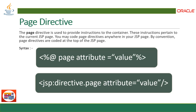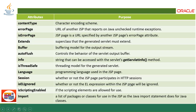The syntax for a page directive uses the tag percentage at-rate with 'page' as the keyword, followed by the attribute and its value. In XML format the declaration looks like: jsp:directive.page attribute='value'. The attributes you can define in page directive include: contentType, character encoding scheme, errorPage (which defines the URL of another JSP that reports on Java unchecked runtime exceptions), isErrorPage, extends (the superclass the generated servlet must extend), and buffer (which defines the buffering model of the output stream).